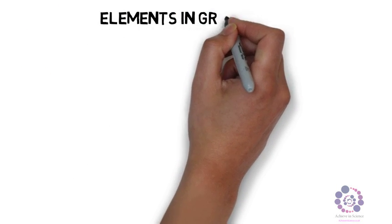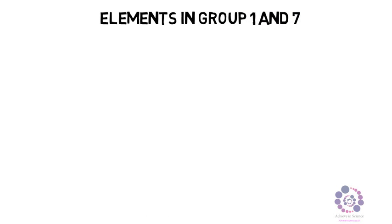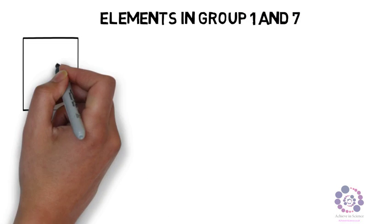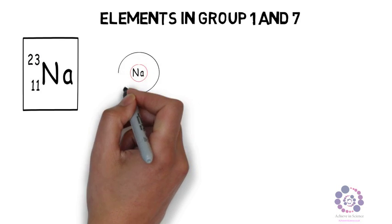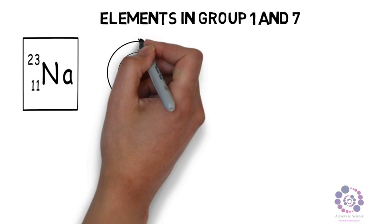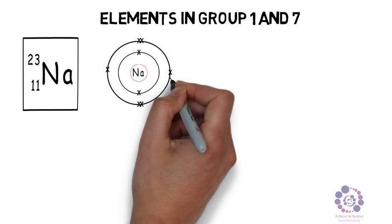Elements in group 1 and 7 then, let's have a look. Let's choose one. So if we choose group 1, let's choose sodium. If we draw the atomic structure of sodium, we find that it has the electronic structure configuration of 2, 8, 1.